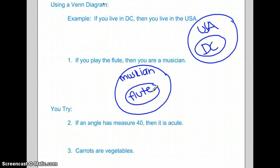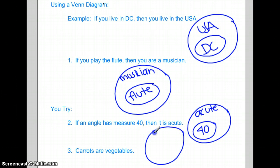Pause the video and try numbers 2 and 3. For number 2, you should have acute on the outside and 40, the measure 40 on the inside. Because not all acute angles are 40 degrees, but all 40 degree angles are acute. Number 3. Vegetables should be the big circle and carrots should be the inner circle. Not all vegetables are carrots, but carrots are definitely vegetables.